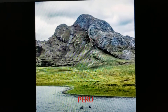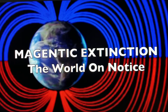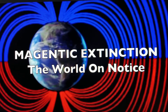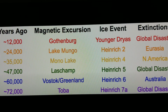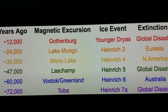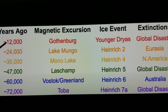Everything starts because of magnetics. The Earth goes into a cycle every 12,000 years — they call it the magnetic extinction cycle. I'm going to show you another chart covering pole shift and pole reversal, that's what they call it. The last pole shift we had was 12,000 years ago. If you read over here it says magnetic extinction, ice events, and extinctions.